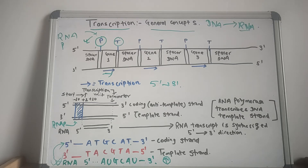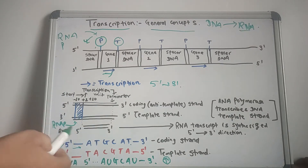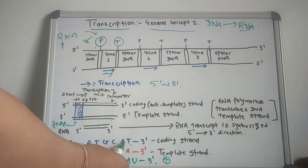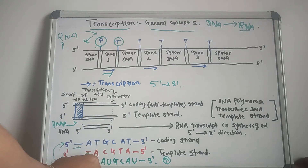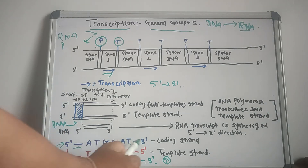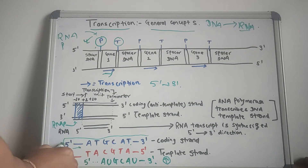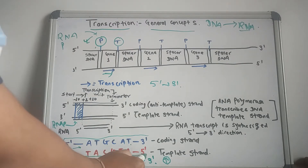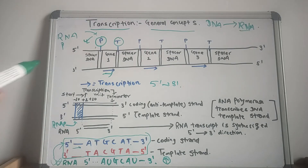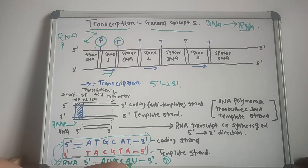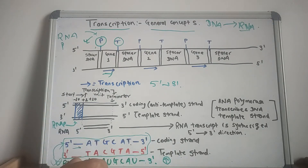By convention, the base sequence of the gene is given from the coding strand. For example, if the coding strand is A-T-G-C-A-T and the template strand is T-A-C-G-T-A, then when the RNA polymerase transcribes, the RNA formed is A-U-G-C-A-U. This newly formed RNA is antiparallel and complementary to the template strand but exactly the same as the coding strand, except T is replaced by U.